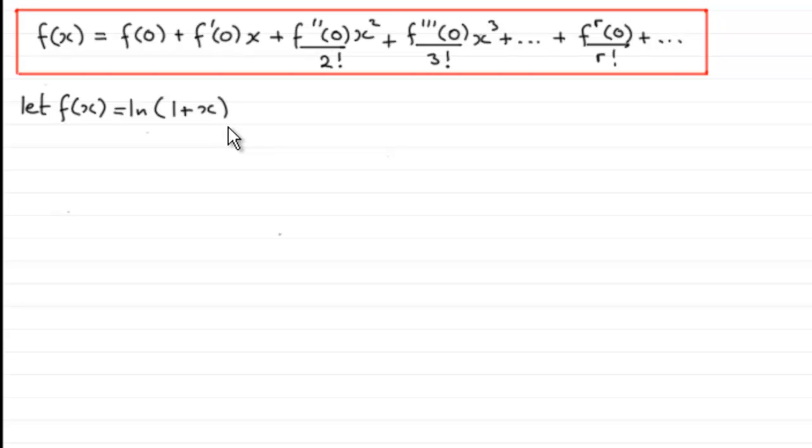Okay, so welcome back if you did have a go. So we've got f(x) equals the natural log of 1 plus x. So first of all, we need to find out what f(0) is. And f(0), just substitute 0 in here, and we've got the natural log of 1. And the natural log of 1 is, in fact, 0.